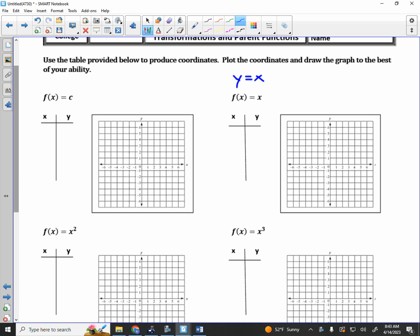Y equals x means the same thing. If we plug a value in for x, it will produce a value for y. If x was negative 2, what would the y value be? Negative 2. If x was negative 1, y would be negative 1. If x was 0, y would be 0.